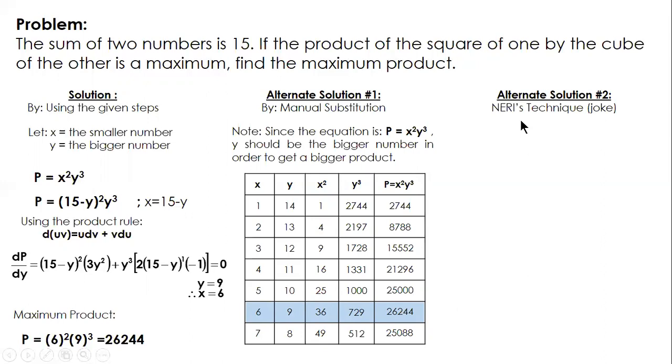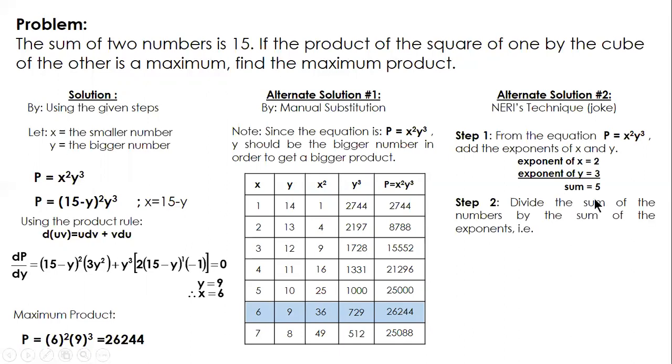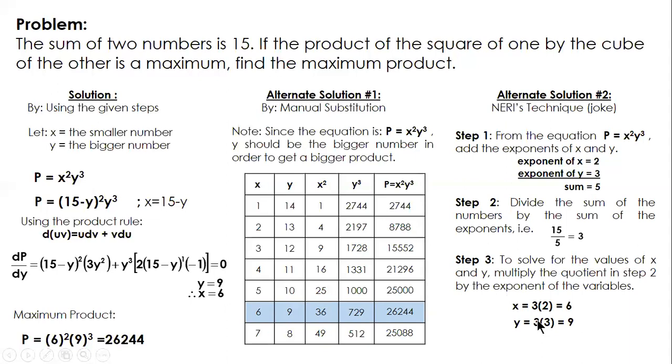The last one is my technique. Step one: add the exponents—2 plus 3 equals 5. Step 2: divide the sum of numbers, 15, by the sum of exponents, 5—the quotient is 3. Step 3: multiply the quotient by the exponent of the variable. x equals 3 times 2 equals 6, y equals 3 times 3 equals 9. That's all, thank you.